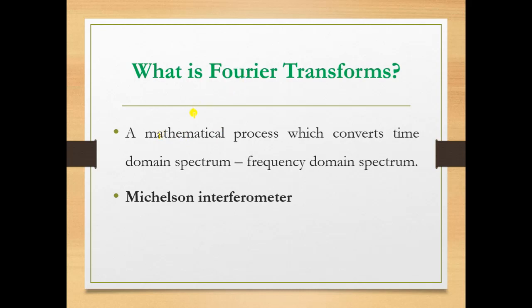Fourier transform is a mathematical process which converts time domain spectrum to frequency domain spectrum. At the end, whatever spectrum we are getting will be in time domain spectra. Fourier transform is a mathematical process we have to apply to convert this time domain spectrum to frequency domain spectrum.